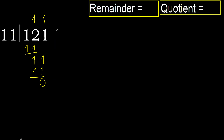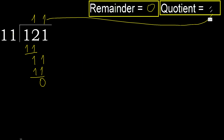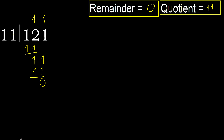Next — that is not a number, therefore finish it. 121 divided by 11 is 11.